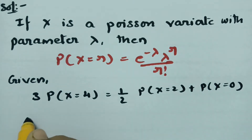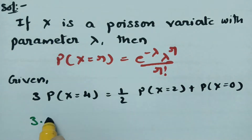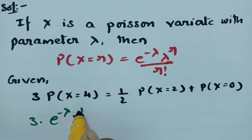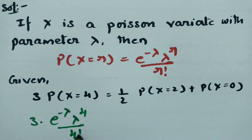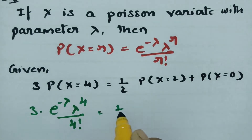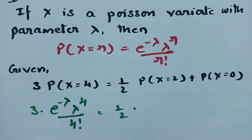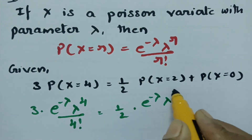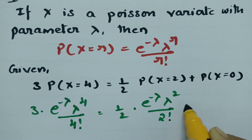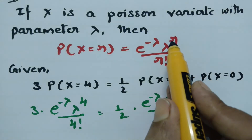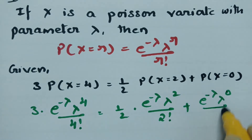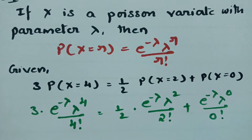3 times e to the power minus lambda, lambda to the power 4, divided by 4 factorial — that is 24. This equals half times: if I substitute r as 2, this will be e to the power minus lambda times lambda squared divided by 2 factorial. And if I put r as 0, this will be e to the power minus lambda, lambda to the power 0, divided by 0 factorial.